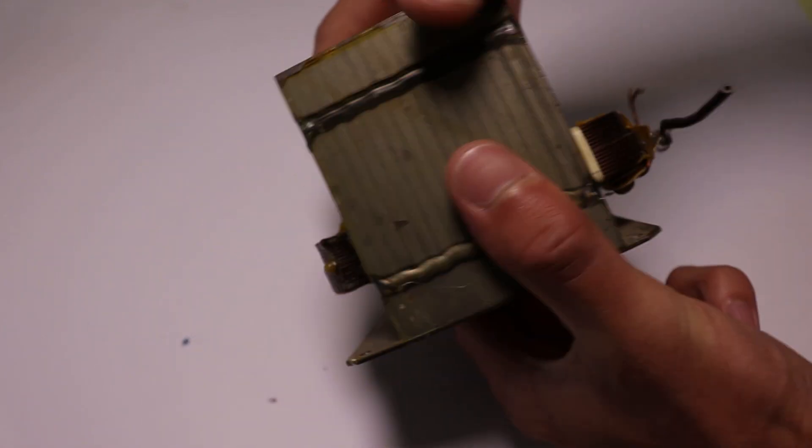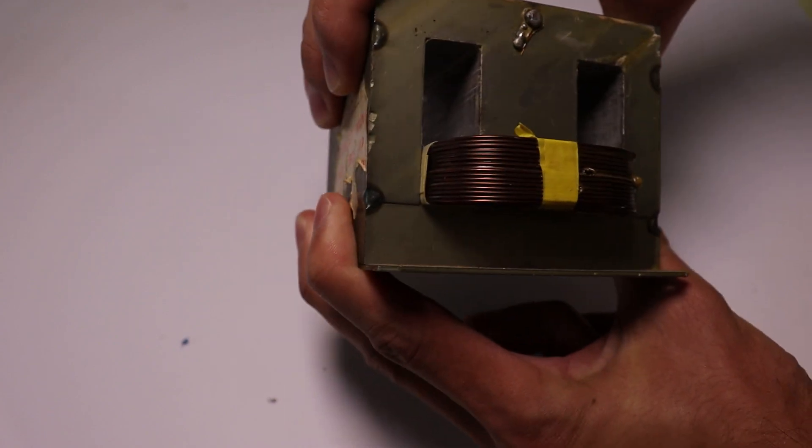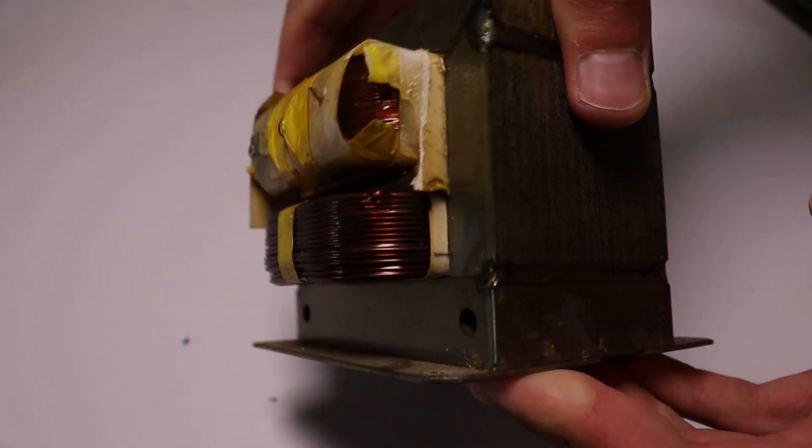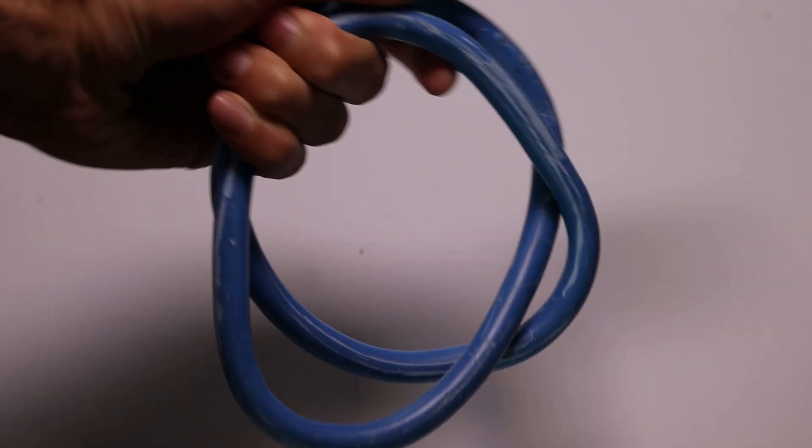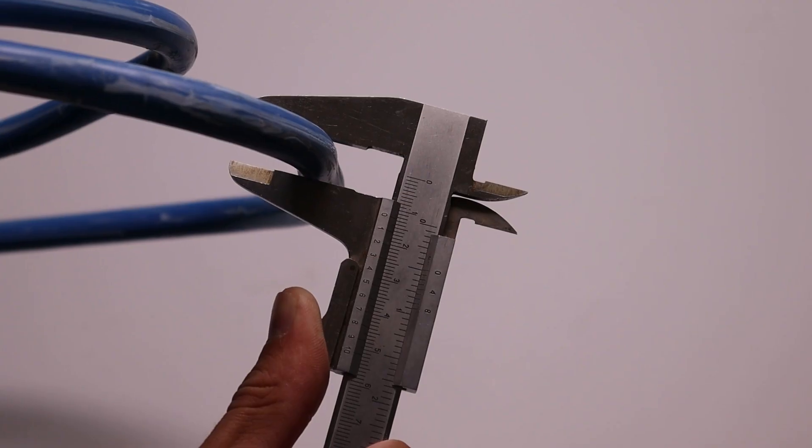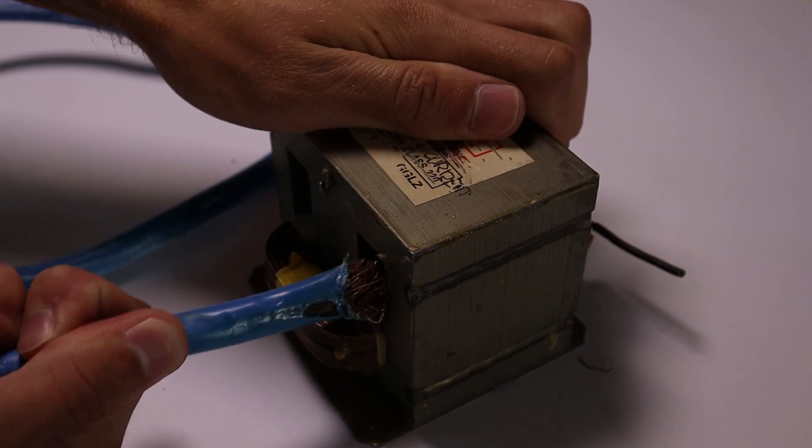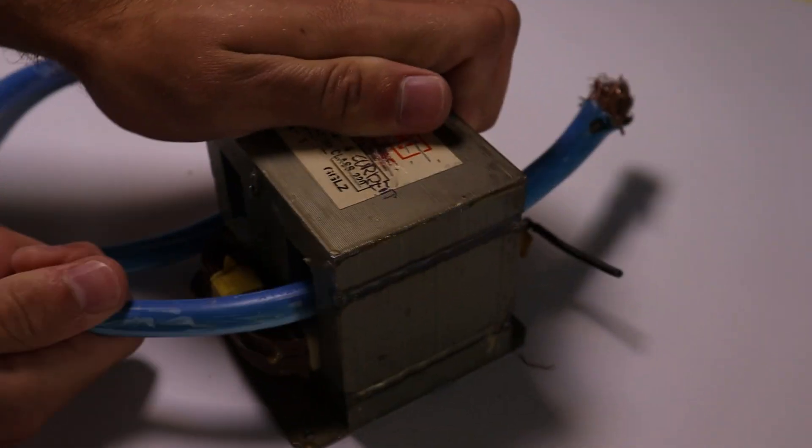The first thing to look at was the microwave oven transformers, which are the main part of the project. One of them was already modified and the other was not. Next I used this thick wire which was 30mm in diameter and I inserted it in the transformer, making it a secondary winding.